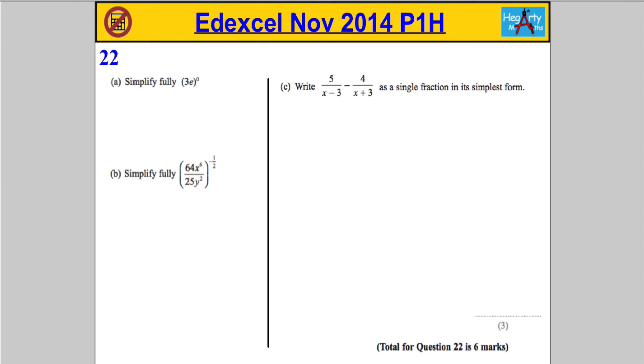Okay, question 22. Part A, simplify fully 3e all to the power of 0. Doesn't matter what's in the brackets here, folks. Anything to the power of 0 is always 1, so we should always get that mark.